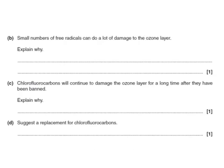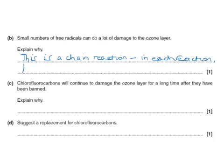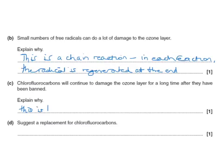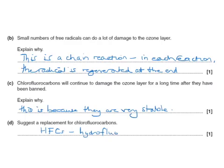Small numbers of free radicals can do a lot of damage to the ozone layer — explain why. This is a chain reaction: in each reaction, the radical is regenerated at the end. Chlorofluorocarbons will continue to damage the ozone layer for a long time after they've been banned — explain why. This is because they are very stable. And suggest a replacement for chlorofluorocarbons: these would be HFCs, which are called hydrofluorocarbons.